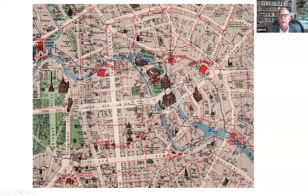Here is Alexanderplatz, which in 1800 was really at the periphery of the city, but then with industrialization over a century it expanded far outwards. It was a major transportation hub. To the east of it, on the right of this map, were all working-class districts. And in fact, it's where Döblin grew up.